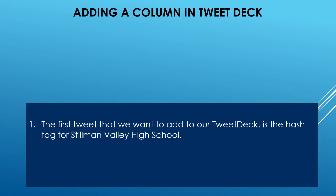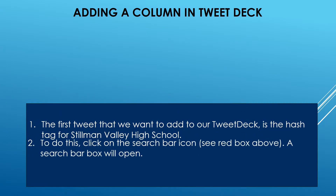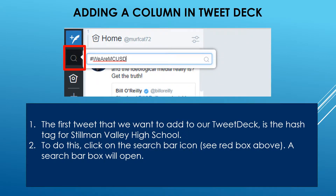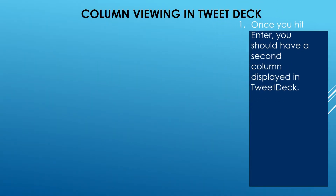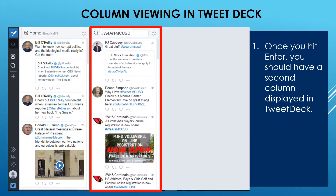So how do you add a column in TweetDeck? The first tweet we want you to add to your TweetDeck is the hashtag for Stillman Valley High School or the district website. To do this, click on the search bar — you are going to see that red box. In the search bar, you are going to type in hashtag WeAreMCUSD. Once you hit enter, you should have a second column displayed in your TweetDeck. This second column displays all of the tweets that are going to show up in your hashtag for the Meridian School District. So even being on TweetDeck, you don't miss out on what's coming through on Twitter — except this way you have selected what you want to see.